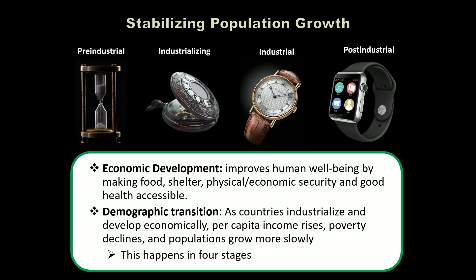This happens in four stages. The demographic transition starts with what we call pre-industrial, moving into industrializing — where we're actively adding new technology, developing infrastructure, creating educational and employment opportunities — then into an industrial economy, and finally post-industrial. Each stage is characterized by different levels of technological access as well as other social reforms.